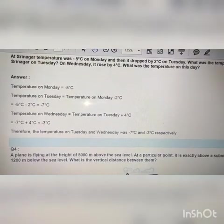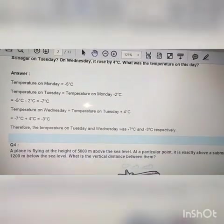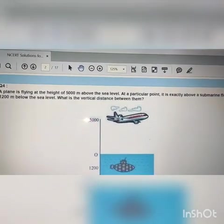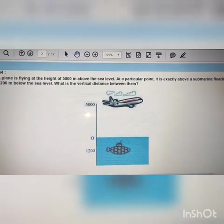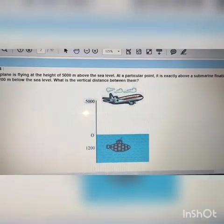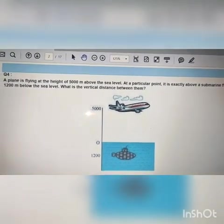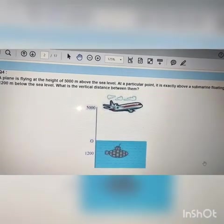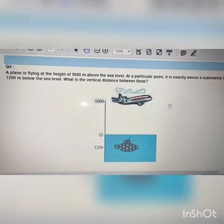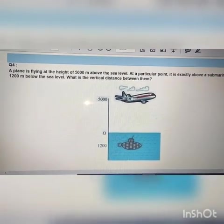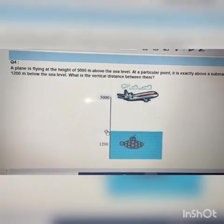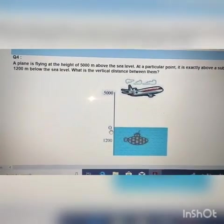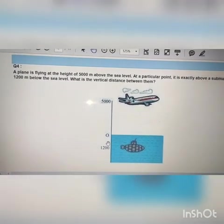This is minus 7 degrees Celsius. Now let's move to question 4. What is question 4? Let me tell you. This question 4 is based on number line. You have seen horizontal number line. This is vertical number line. So in this, above 0, all the positive integers. And below 0, all the negative integers.